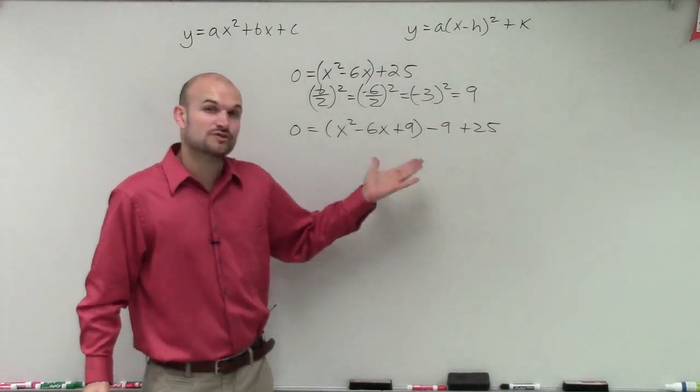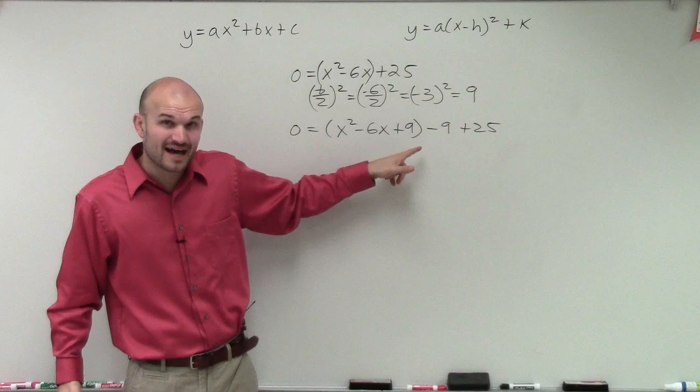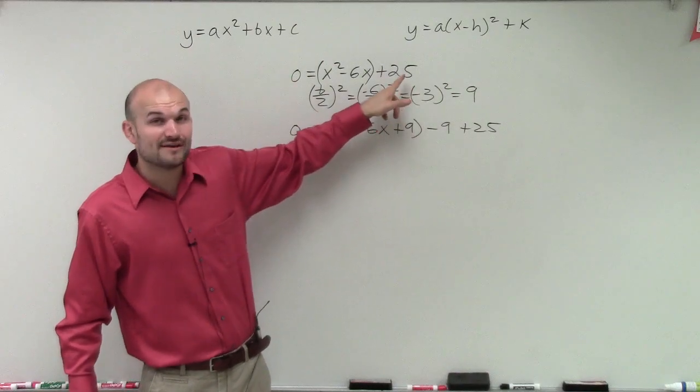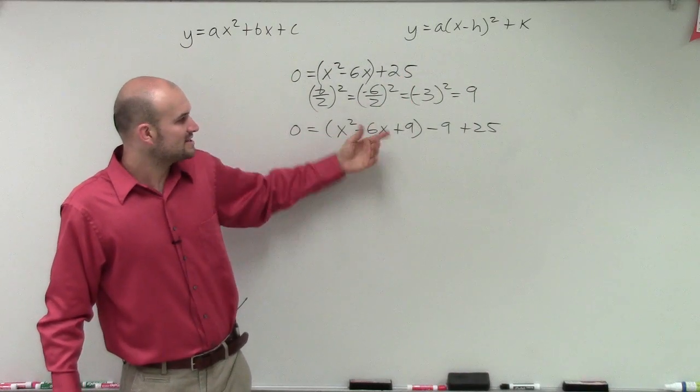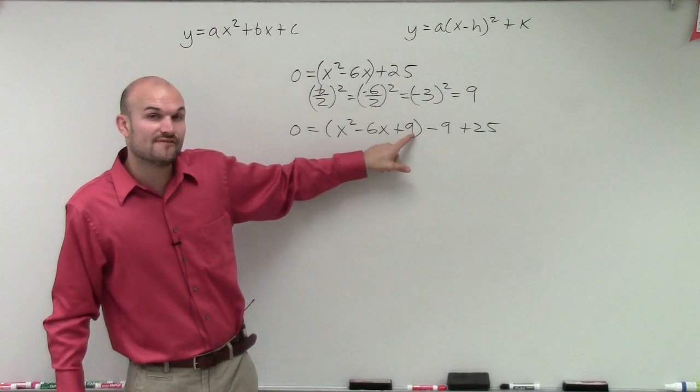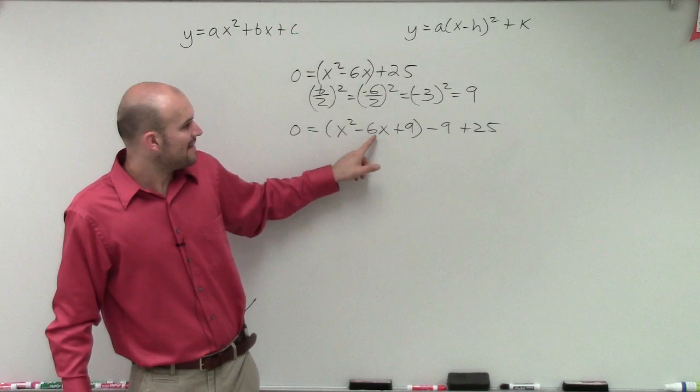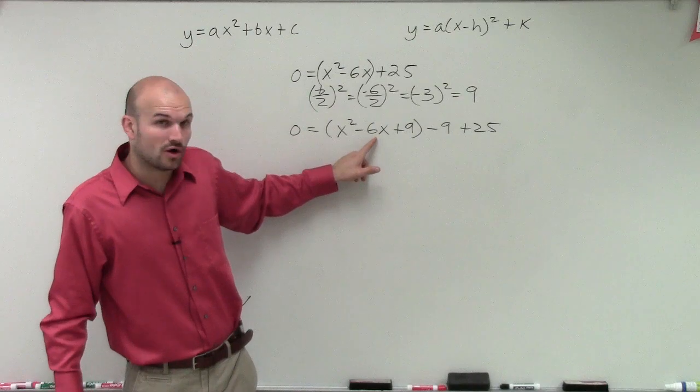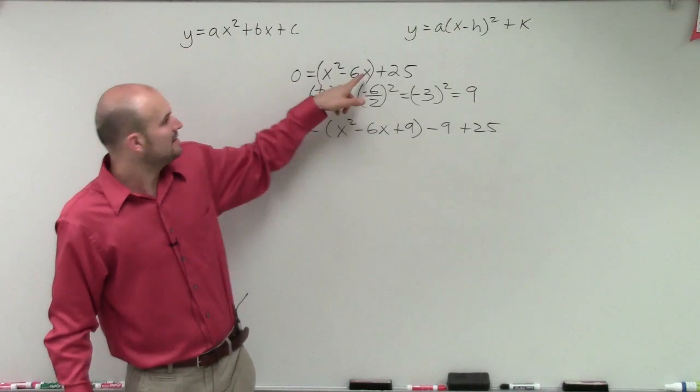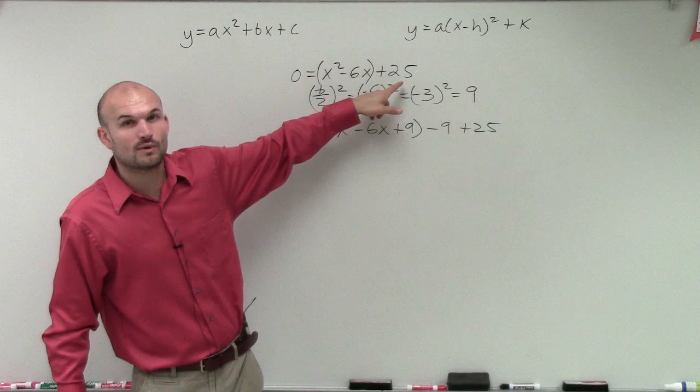Now we can see that this is a perfect square trinomial. Because notice our c value is a perfect square. I know 25 was a perfect square. But remember, for this to be a perfect square trinomial, your c value has to be a square number. And then your b has to be double the square root of your c. See, negative 6 is not double the square root of 25.